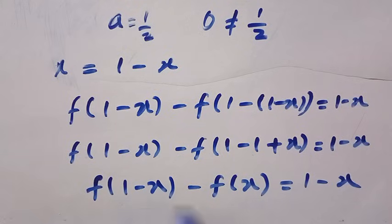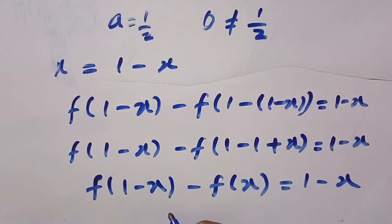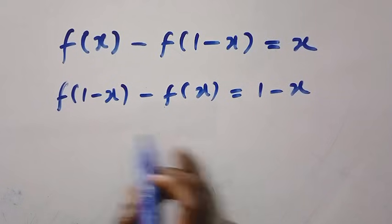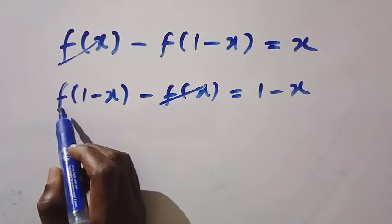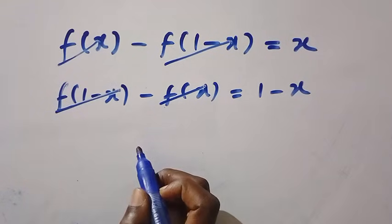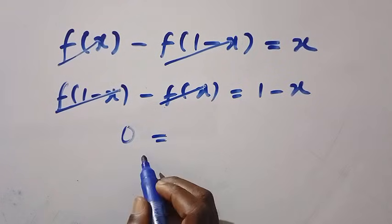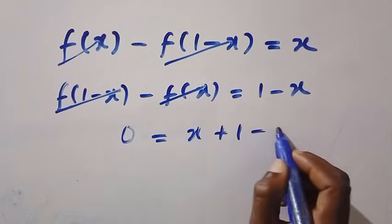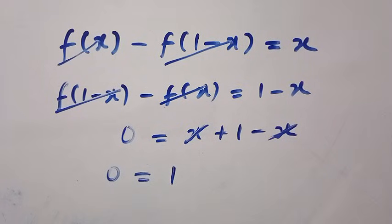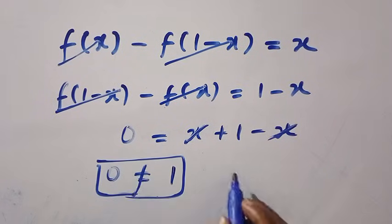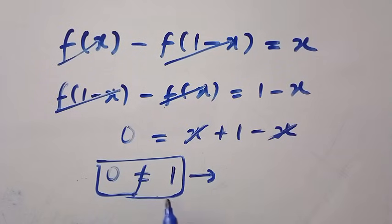So, trying to check the substitution, we have two sets of equations from the first equation and the second equation. Let's bring the two equations together and solve. Adding these together, f of x cancels f of x, and f of 1 minus x cancels f of 1 minus x. We only have 0 on the left-hand side, equals x plus 1 minus x. So 0 equals plus x minus x, which cancel, and this equals 1. But can 0 equal 1? No. So we still have another contradiction — substitution does not work.